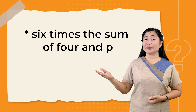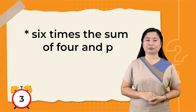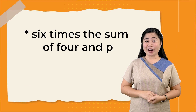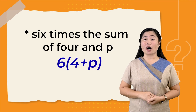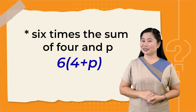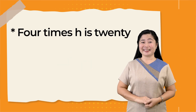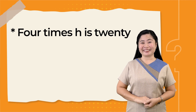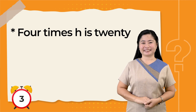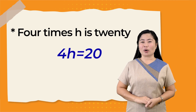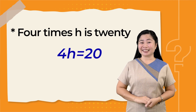Next one: 6 times the sum of 4 and P. If you got 6 times the quantity of 4 plus P, congratulations! You got it! Next is: 4 times H is 20. If your answer is 4H equals 20, congratulations! You got it right!